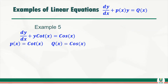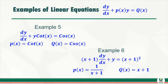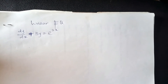In example five, p(x) is cot(x) and k(x) is also cot(x). Note that p(x) multiplies the dependent variable y. In example six, we have (x+1) multiplying dy/dx, so we divide both sides by (x+1) to isolate dy/dx. We now see that p(x) is one over (x+1), and k(x) is reduced by dividing by (x+1).